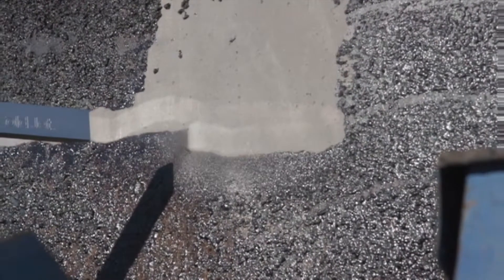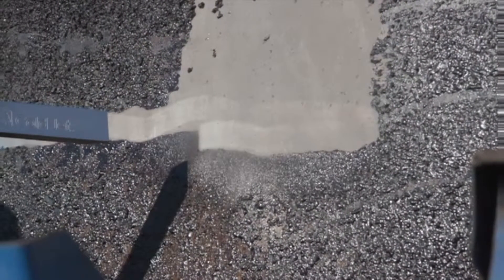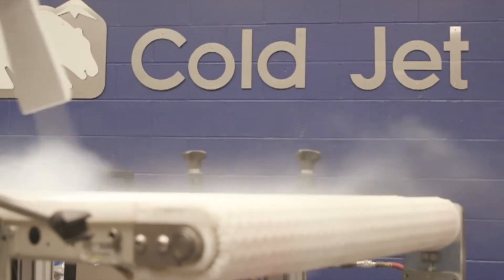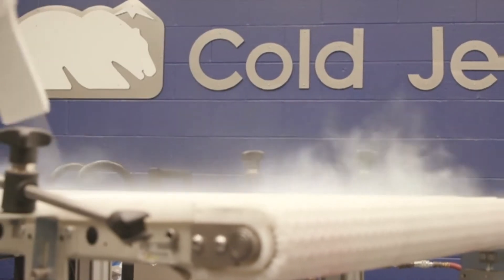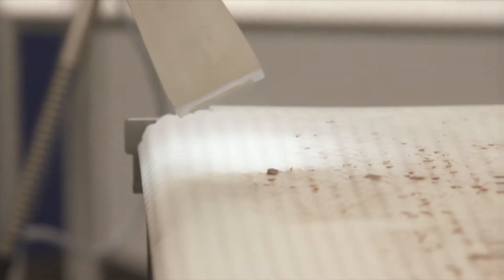Dry ice cleans in three ways. First, you have a solid particle striking the surface, some kinetic impact. Second, it's very cold. It's minus 109 Fahrenheit, about minus 79 Celsius. So it'll actually cool the contaminant faster than the substrate. It'll make the contaminant shrink and despond.